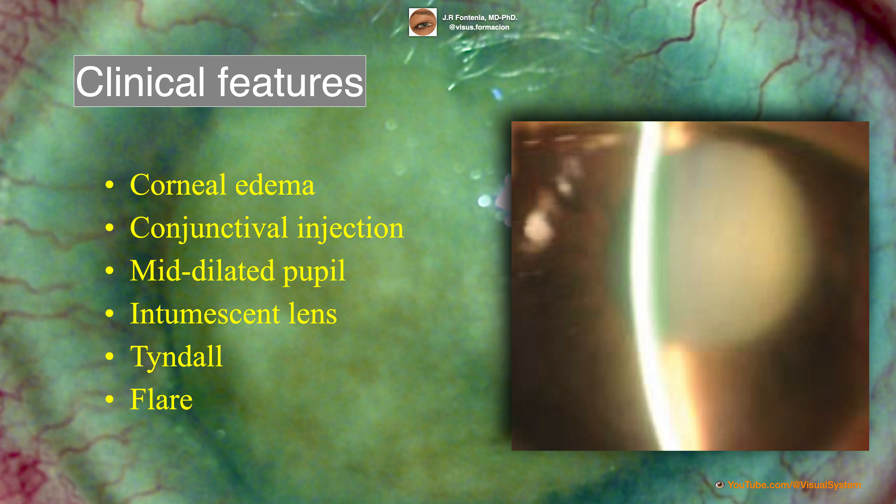Clinical features may include corneal edema, conjunctival injection, and a mid-dilated pupil. The intumescent lens may be observed pushing the iris forward and reducing the anterior chamber depth. Anterior chamber cells and flare may also be present.